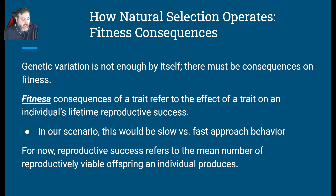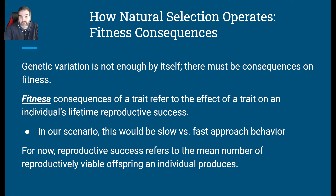Another thing required for natural selection to operate is fitness consequences. Fitness refers to the effect of a trait on an individual's lifetime reproductive success. In our scenario, we're looking at slow approach versus fast approach. Fitness basically means how many reproductively viable offspring an individual can produce. If you have lots of kids and those kids go on to have lots of kids, your genes are going to be very prolific. Fitness here is not about body health or strength — it's reproductive fitness.